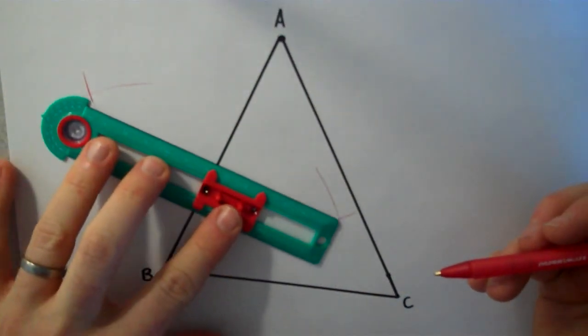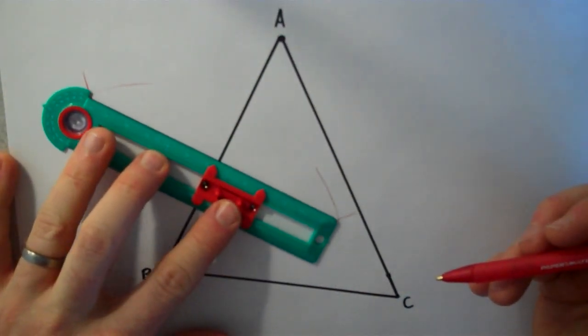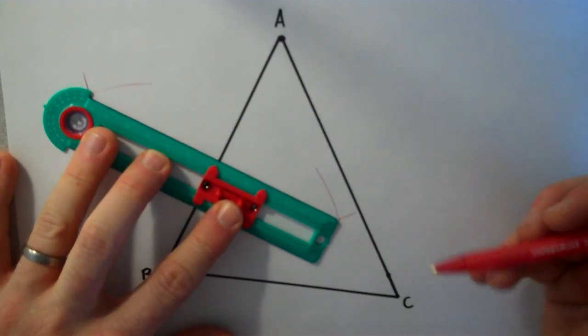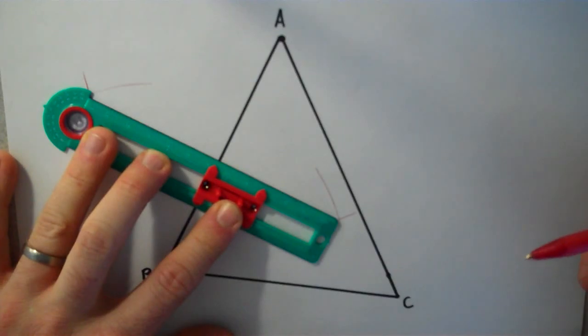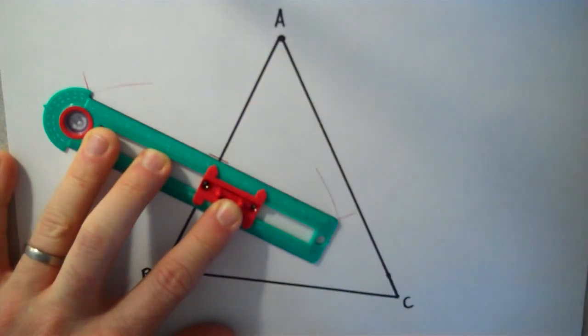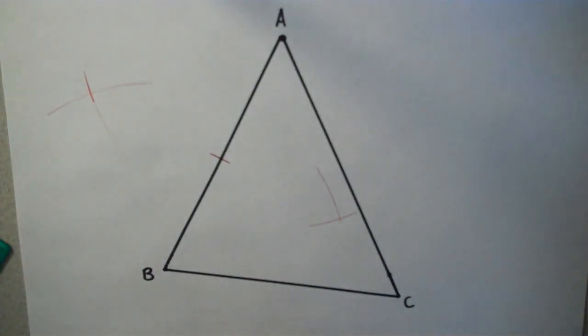Once you have your perpendicular bisector set up, you don't actually need to draw the whole thing because I only need to know where that perpendicular bisector crosses my segment. So I actually just need to put a point, a construction mark right there. That's all I really need.